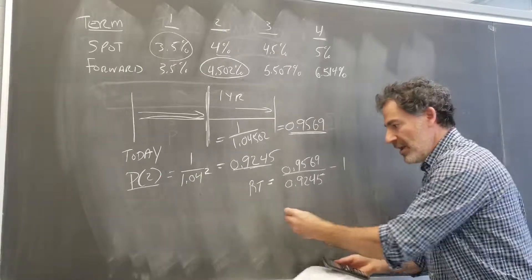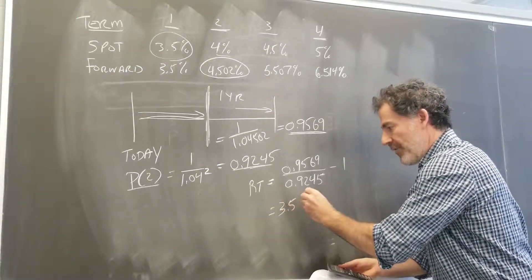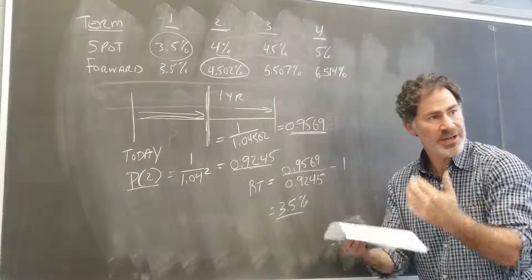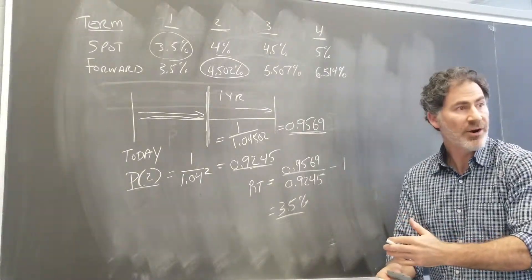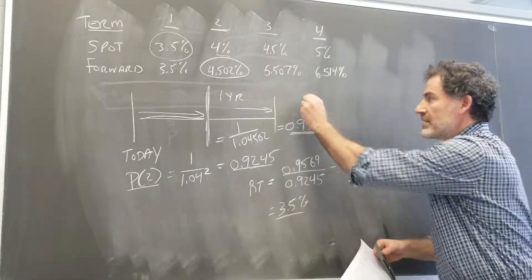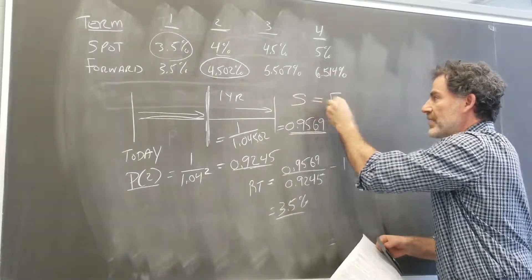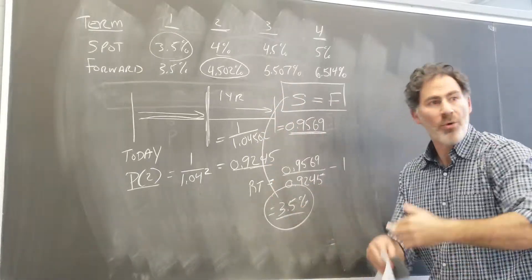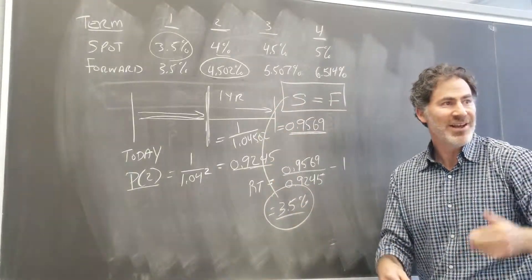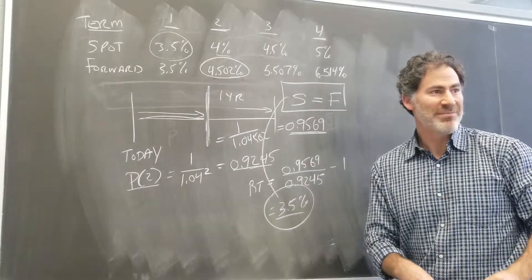Okay, there it is. It's off a little bit by rounding. But what we've just demonstrated here is if the spots evolve as predicted by the forwards, then we should earn that one period risk-free rate. That's it. Okay, so now we'll move on to another example.